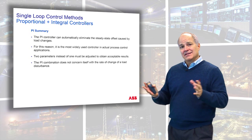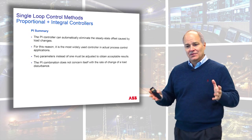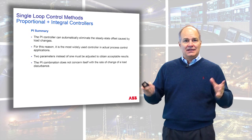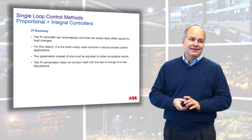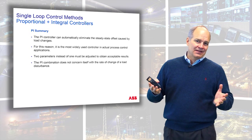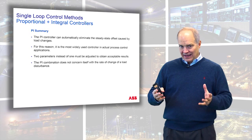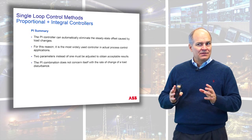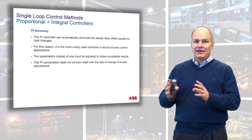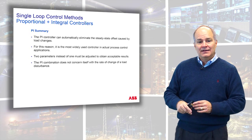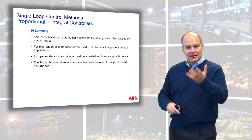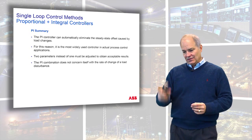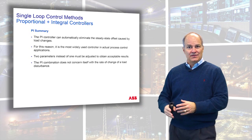Because of that, P and I together are the most commonly used parameters in industry today. When I dump tuning parameters out of a system and see a lot of derivative values - especially large numbers - I really question why. It's usually a red flag.